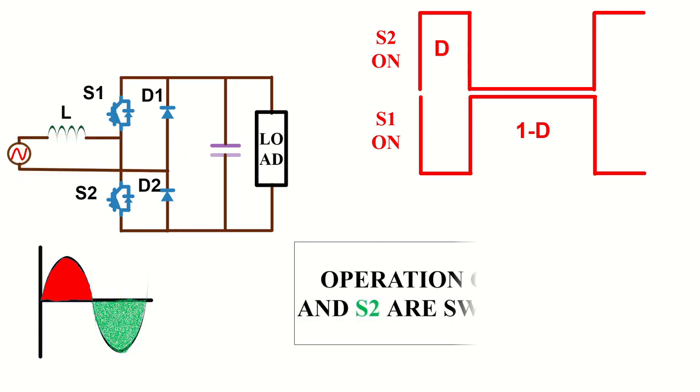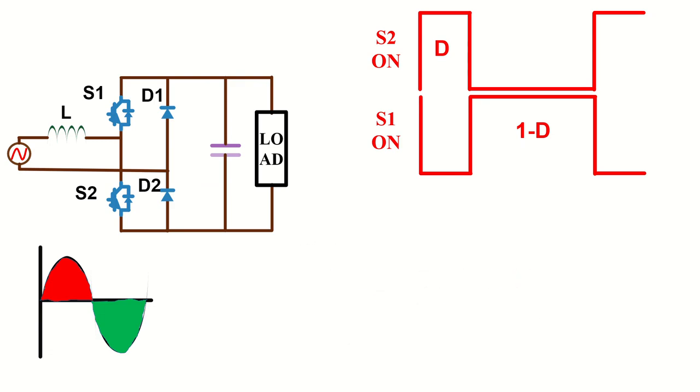During the negative half cycle, the operation is similar except that the role of the high side and low side high frequency switches are swapped. During this half cycle, the switch S1 is turned on for duty ratio of D. This will charge the inductor through S1 and D1.